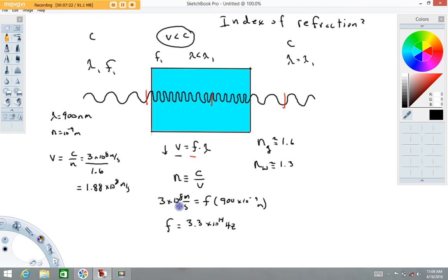And I got that by taking 3 times 10 to the eighth and dividing by 900 times 10 to the minus ninth. So, hopefully that worked out all right. Now, I think I'll move on.